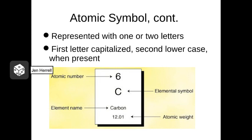There are rules for properly reporting atomic symbols. Atomic symbols consist of one or two letters, and if it's more than one letter, the first letter is capitalized and the second letter is lowercase. For instance, here we have the atomic symbol for carbon — a capital letter C — and you can see it appears right in the middle of its box on the periodic table.